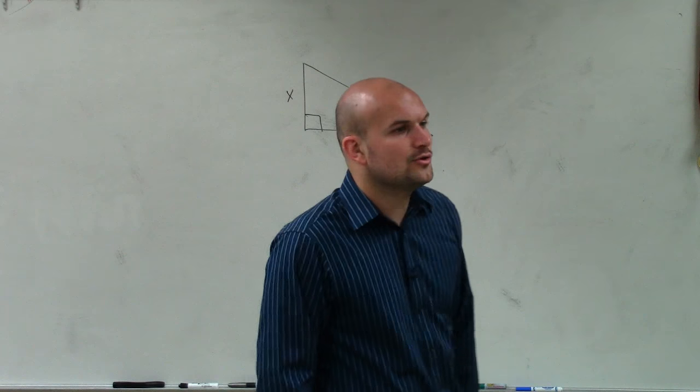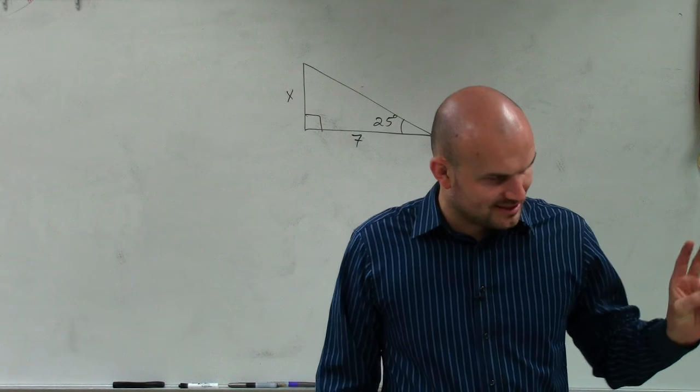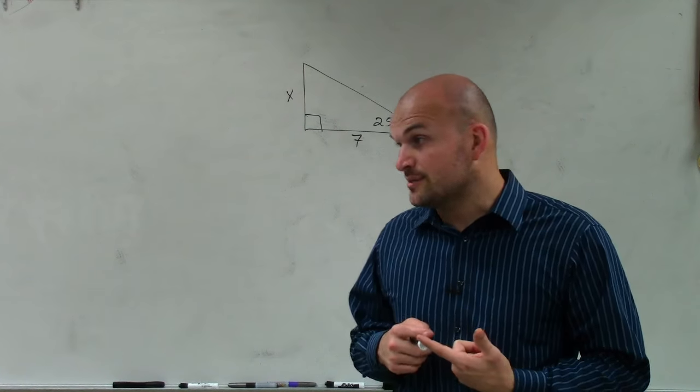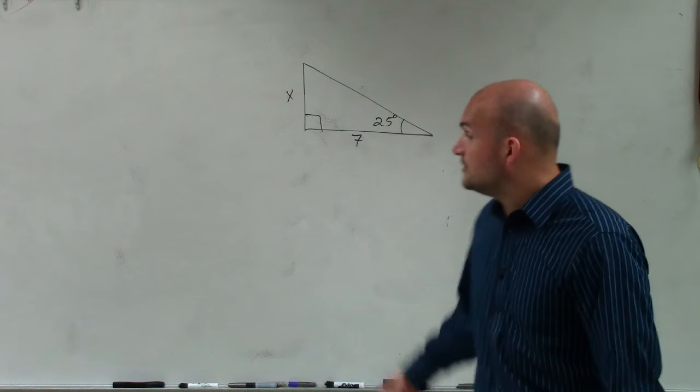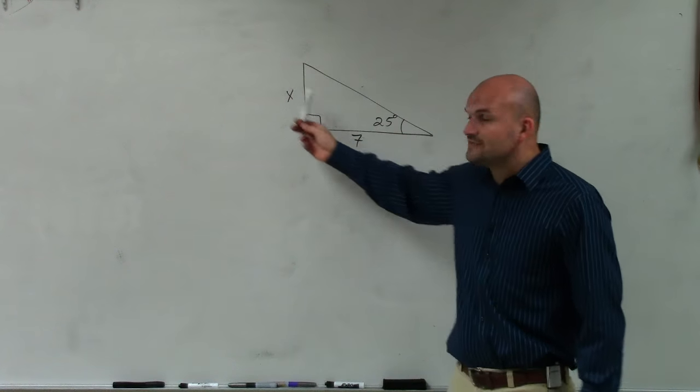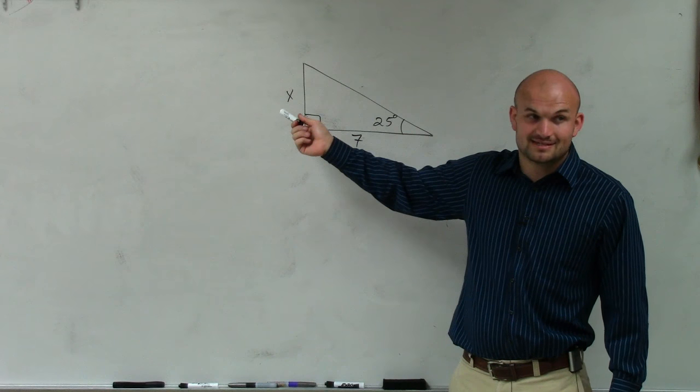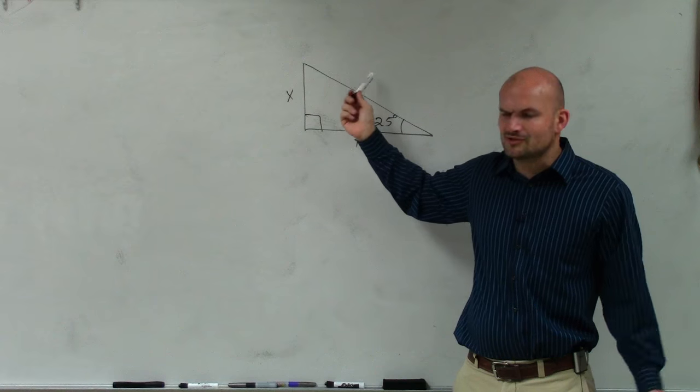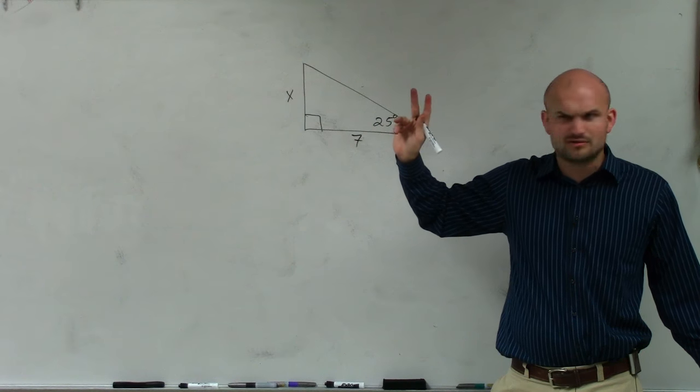Now previously, the way that we learned how to find the missing side of a right triangle was Pythagorean theorem. Have the two legs, have the hypotenuse, we can apply that. This is a right triangle, but we don't have one leg, that leg's x, and we don't know what the hypotenuse is. So is it possible to use the Pythagorean theorem when we have two missing side lengths? No, we can't do that.